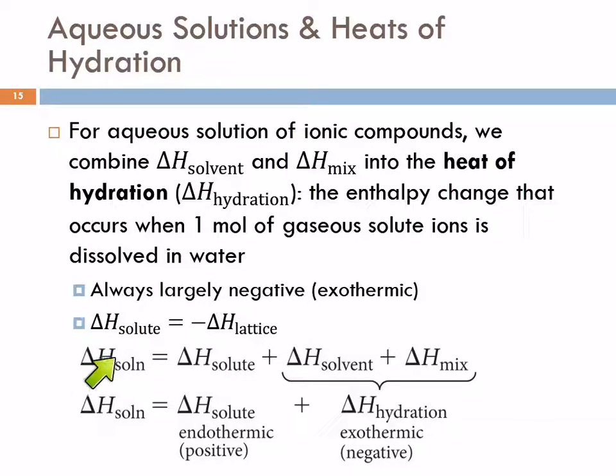So we can say that the heat of solution is equal to the enthalpy change of the solute plus the enthalpy change for the solvent plus the enthalpy change for the mixture. That's what we were looking at before. This is now called the heat of hydration. So overall, the heat of the solution is the heat of solute plus the heat of hydration. This will always be negative and this will always be positive. So again, we're looking at relative strengths here.